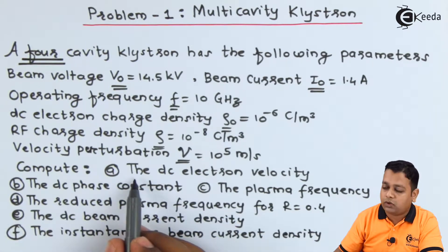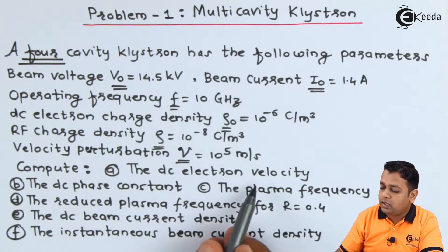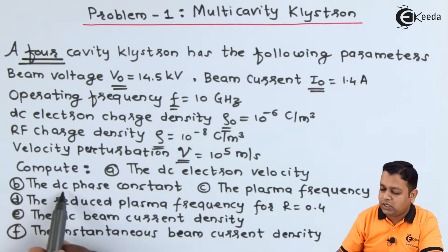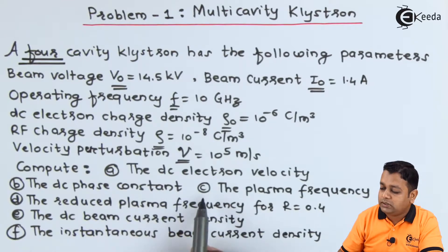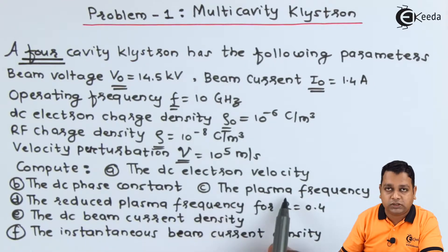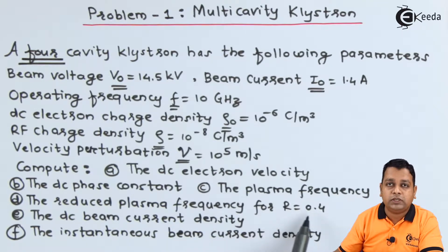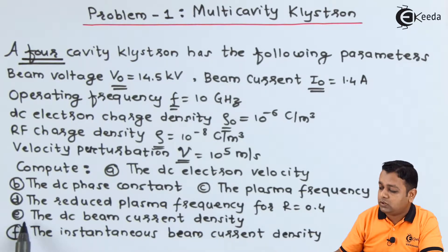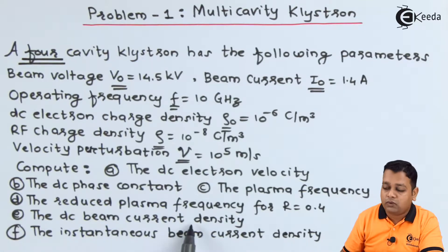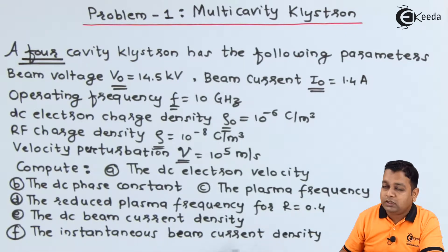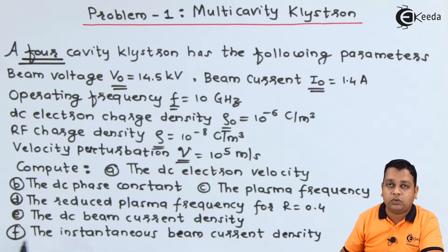We are asked to compute: part A — the DC electron velocity; part B — the DC phase constant; part C — the plasma frequency; part D — the reduced plasma frequency, with R = 0.4; part E — the DC beam current density; and part F — the instantaneous beam current density.